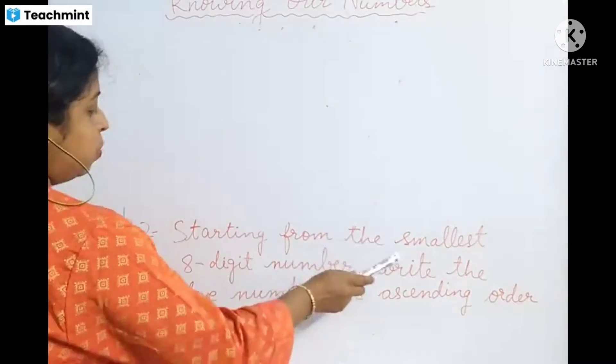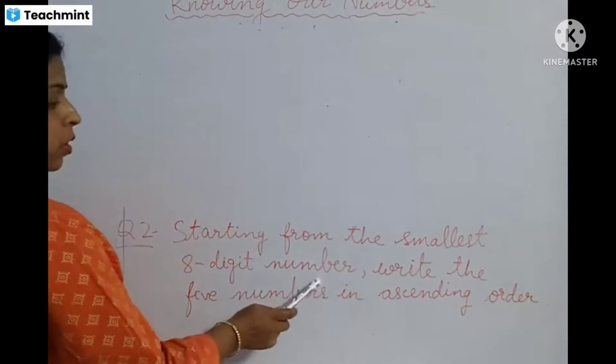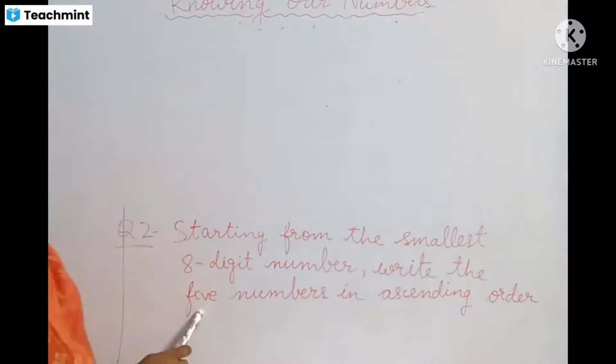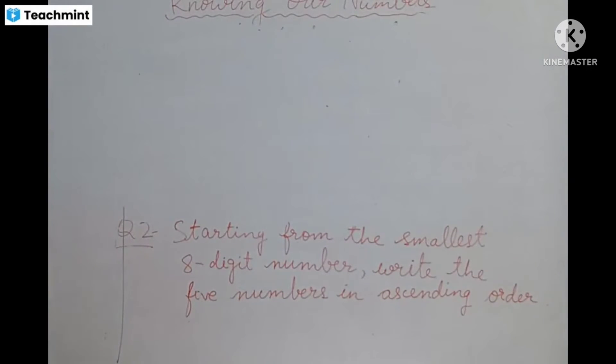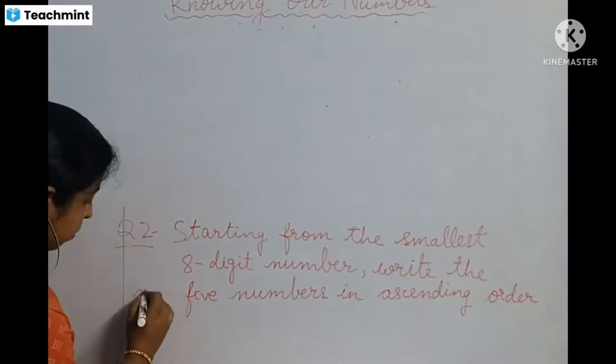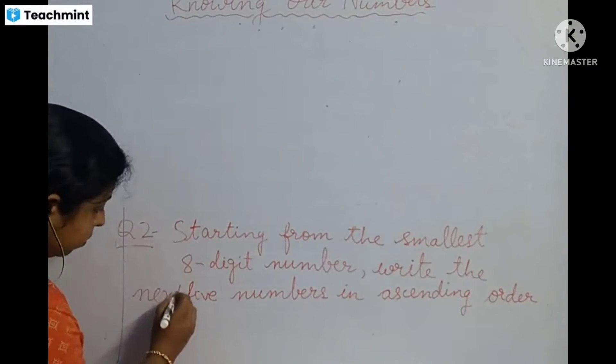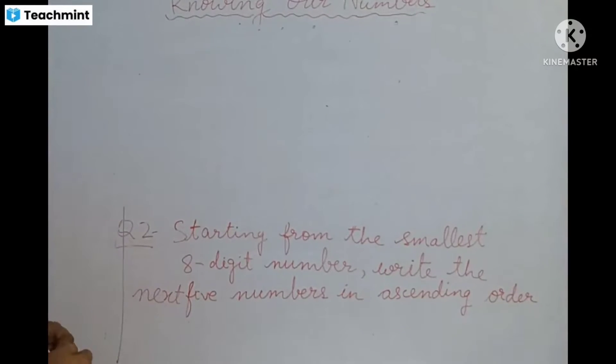Starting from the smallest 8 digit number, write the 5 numbers in ascending order. Write the next 5 numbers in ascending order.